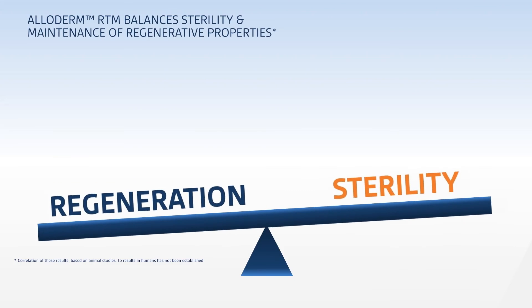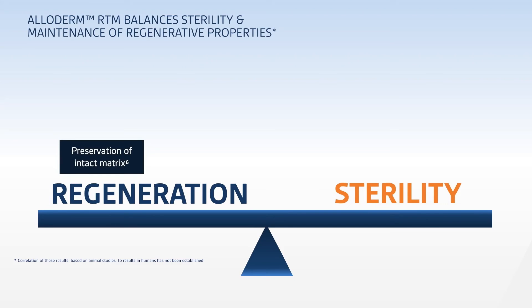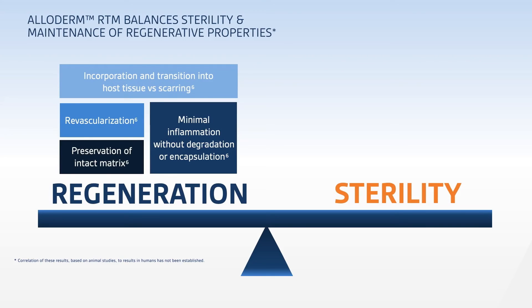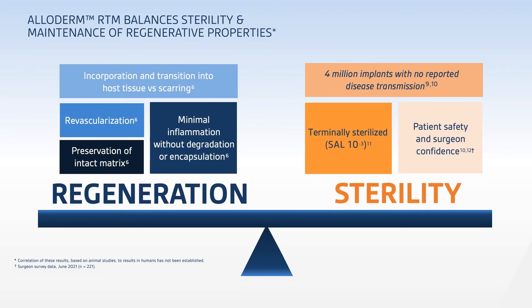In summary, the carefully selected tissue process and sterilization steps used to produce Alloderm RTM create the optimal balance of sterility and regeneration. We get the regenerative properties we're looking for, including preservation of the intact matrix and minimal inflammation, without degradation, encapsulation, or scarring, as well as the benefit of vascularization — all of which support transition into host tissue. Alloderm has been terminally sterilized while maintaining the matrix properties that support regeneration. And because it has been implanted over 3 million times to date, with no documented cases of disease transmission, you can use Alloderm with confidence.